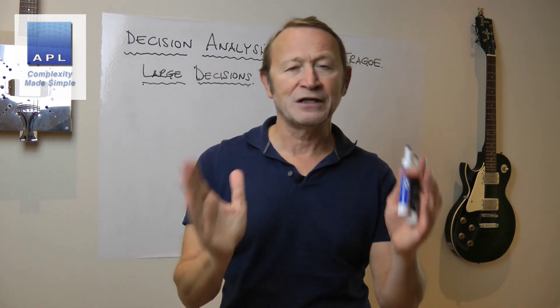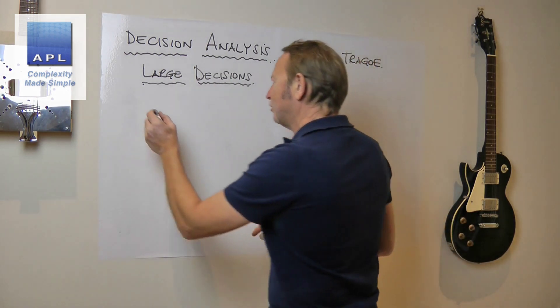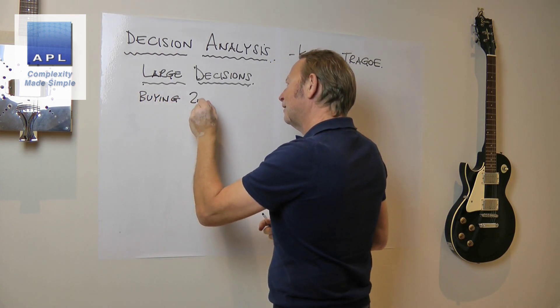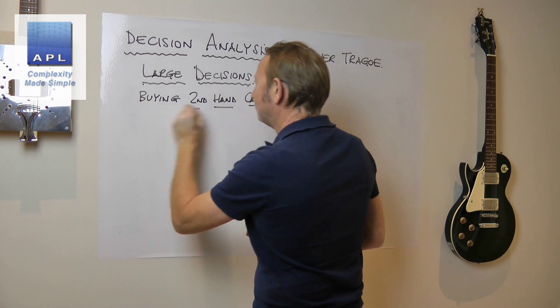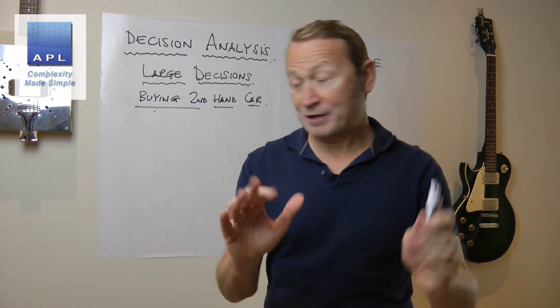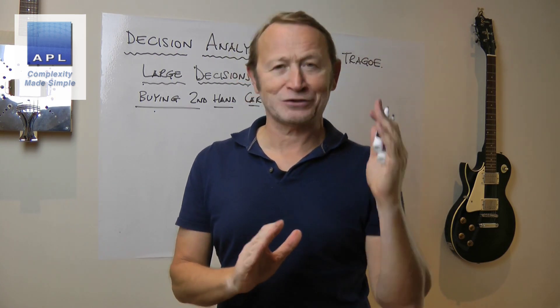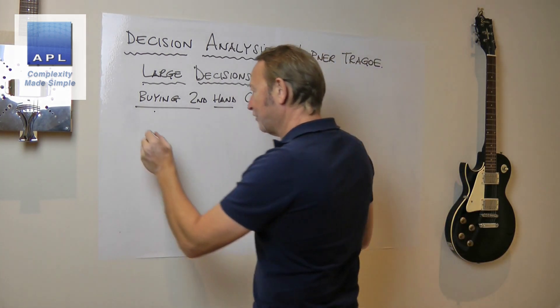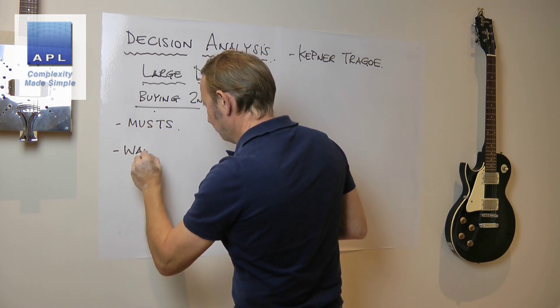As an example, I'm going to use buying a second-hand car to keep it simple. One thing to say about what we're about to do is you should really do this before you even start the process. The first thing you should do is identify musts and wants.